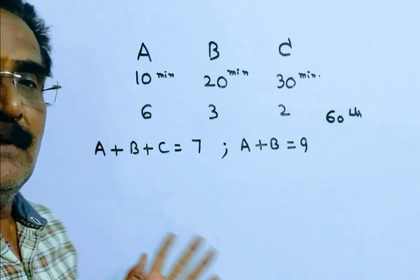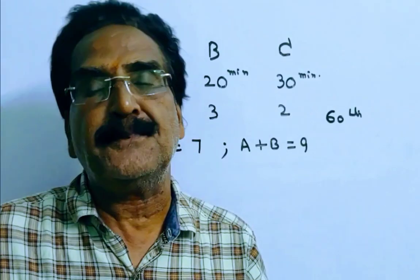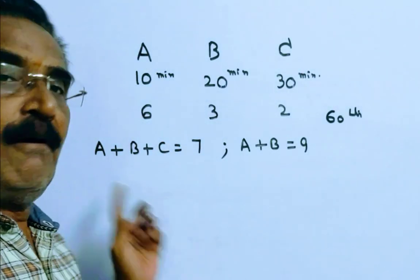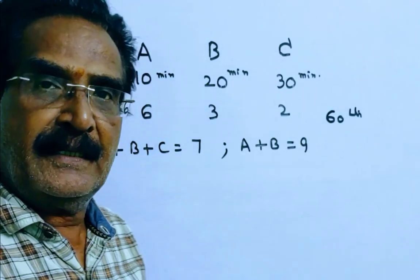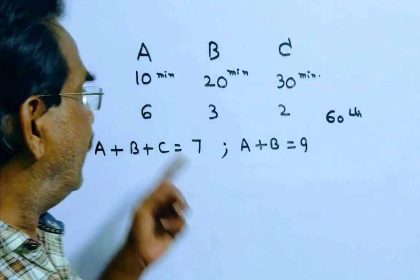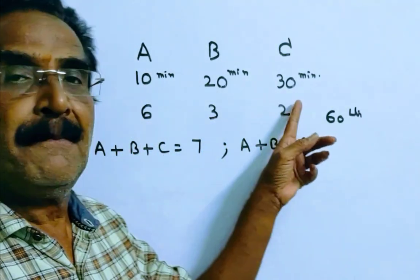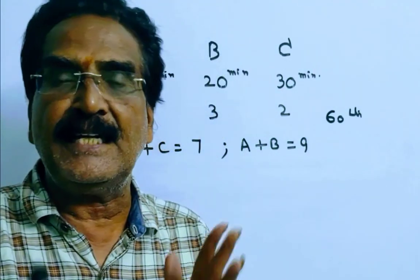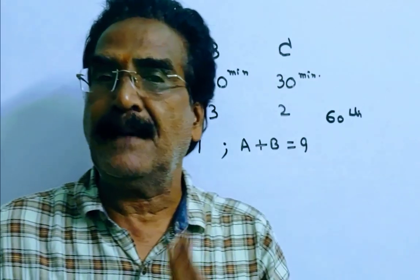Friends, now in the beginning all the 3 pipes are opened. If all the 3 pipes are opened, then they can fill 6 plus 3 minus 2, 7 liters per minute.